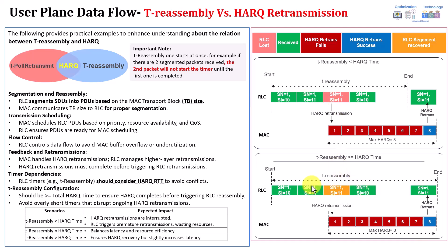This is the main idea. Whenever you plan in the network to extend the maximum HARQ retransmission — for example, from 8 to 16, as 5G supports up to 16 — and assume the HARQ round-trip time for the downlink is 8 milliseconds, then you need 16 multiplied by 8 milliseconds. That gives the minimum T-Reassembly timer needed to wait for recovery from the maximum HARQ retransmission.